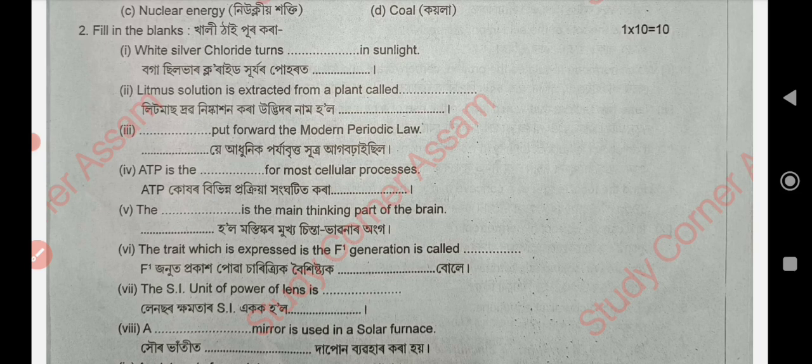Next: litmus solution — a plant-based indicator. Next, question number three: the modern periodic table was given by Henry Moseley.